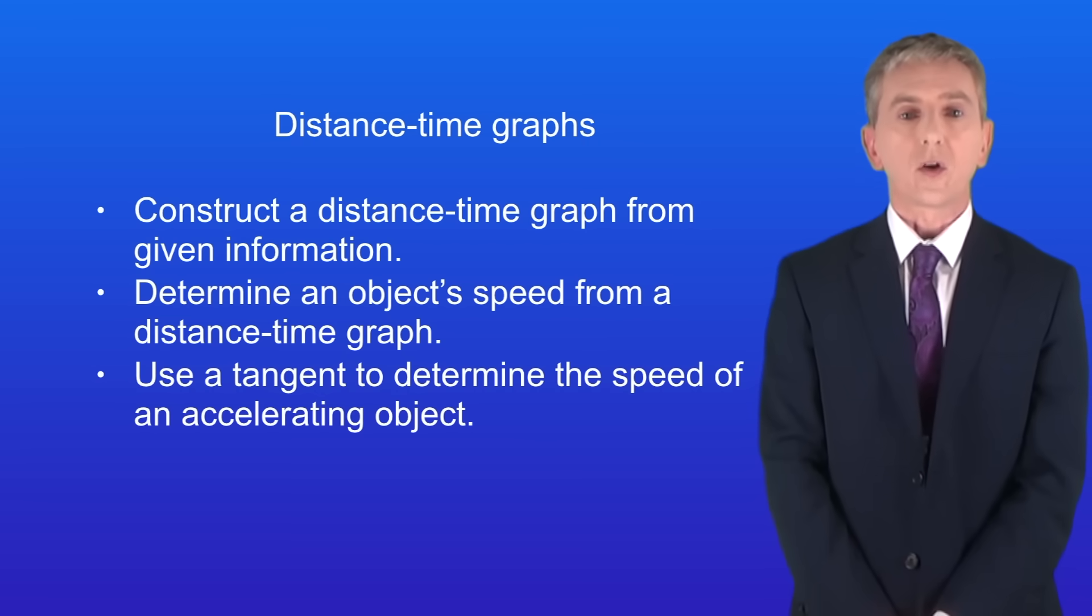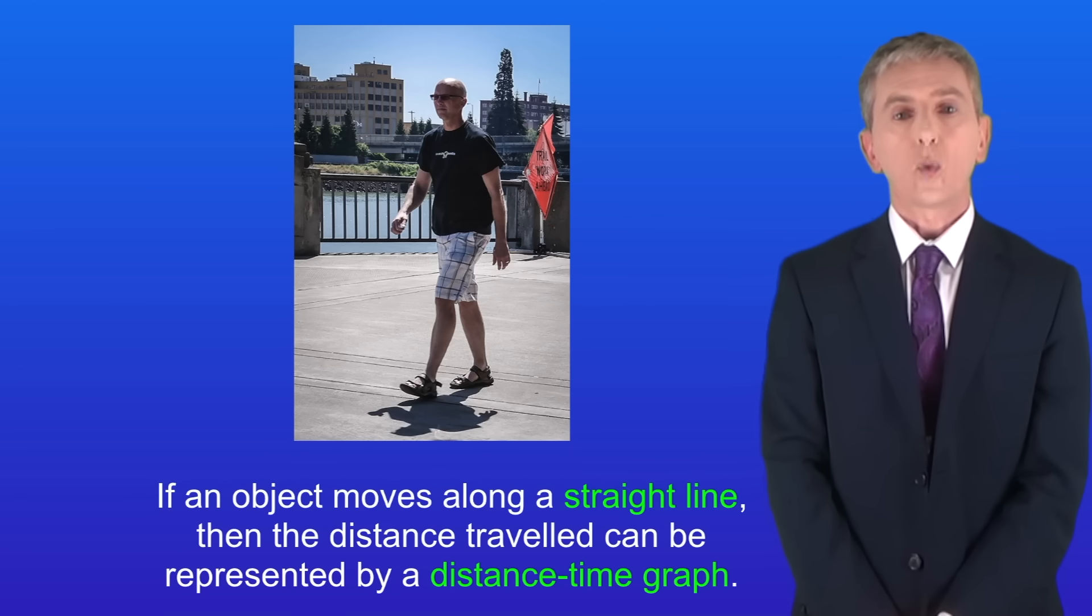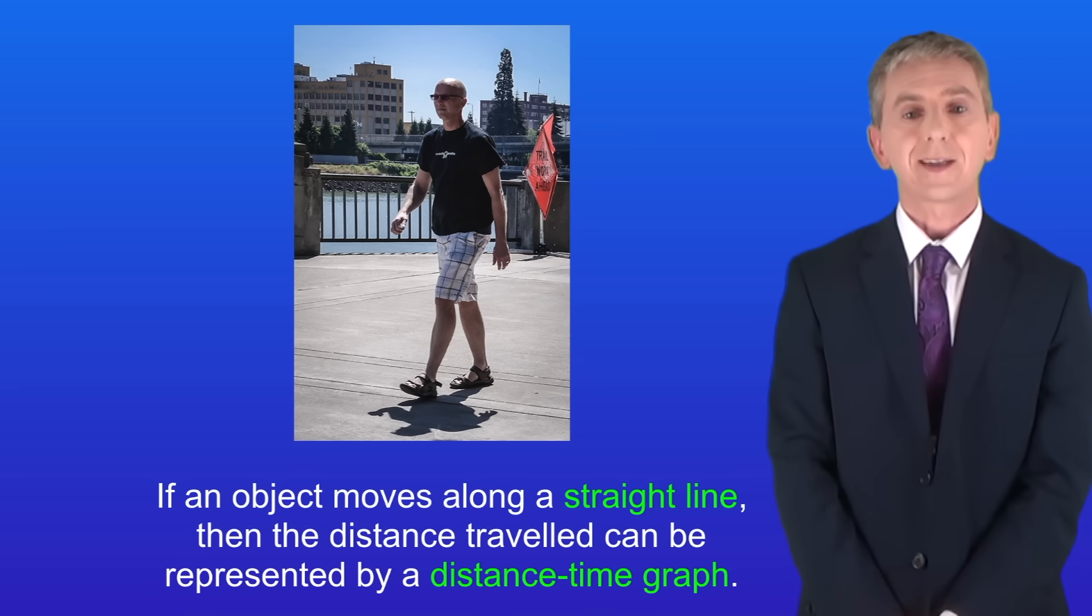In the last couple of videos we've been looking at how objects move, we've learned how to calculate speed, and we've seen the difference between speed and velocity. Now one key fact is that if an object moves along a straight line then the distance traveled can be represented by a distance-time graph, and we're looking at those in this video.